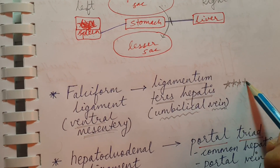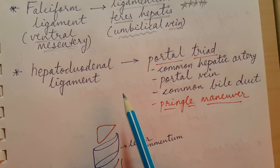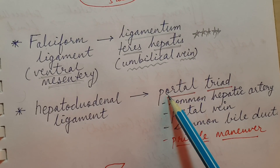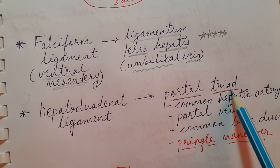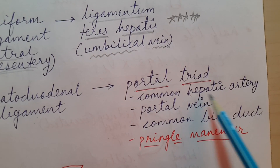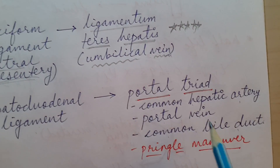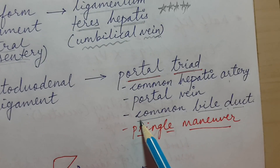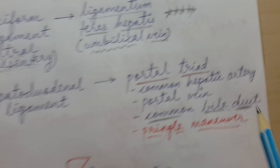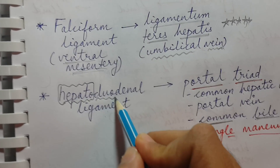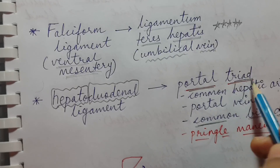The second ligament is the hepatoduodenal ligament, and it contains the portal triad. The portal triad contains three structures: the common hepatic artery, the portal vein, and the common bile duct. An easy way to remember: the common bile duct brings bile from the liver — hence 'hepato' — and takes it to the duodenum — hence 'hepatoduodenal.' This helps you remember that the portal triad is present in the hepatoduodenal ligament.